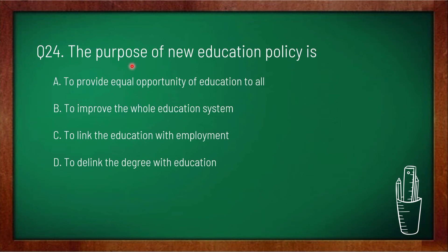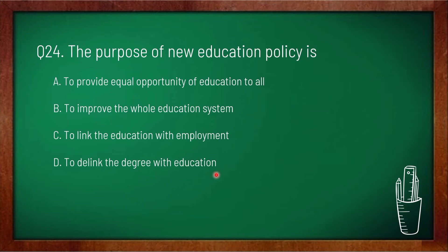Question 24: the purpose of the New Education Policy (NEP) is — option A: to provide equal opportunity of education to all, option B: to improve the whole education system, option C: to link education with employment, option D: to de-link the degree with education. The purpose of NEP is to improve the whole education system, so option B is correct.